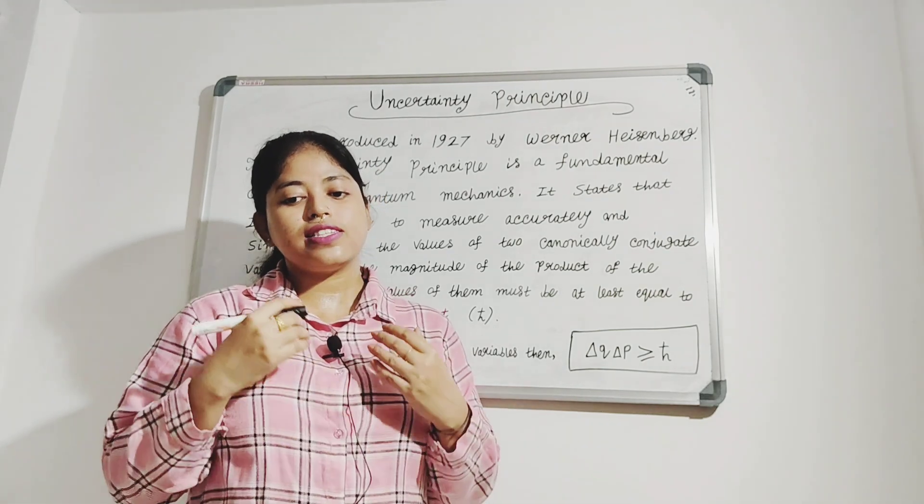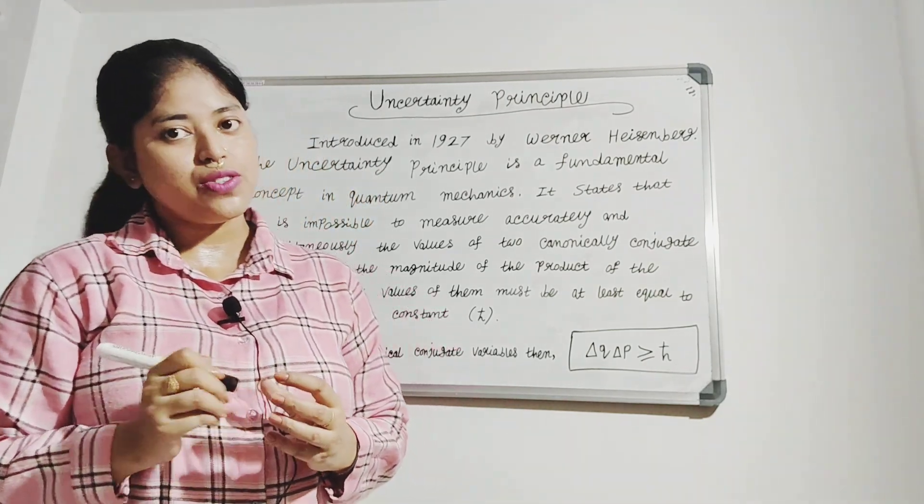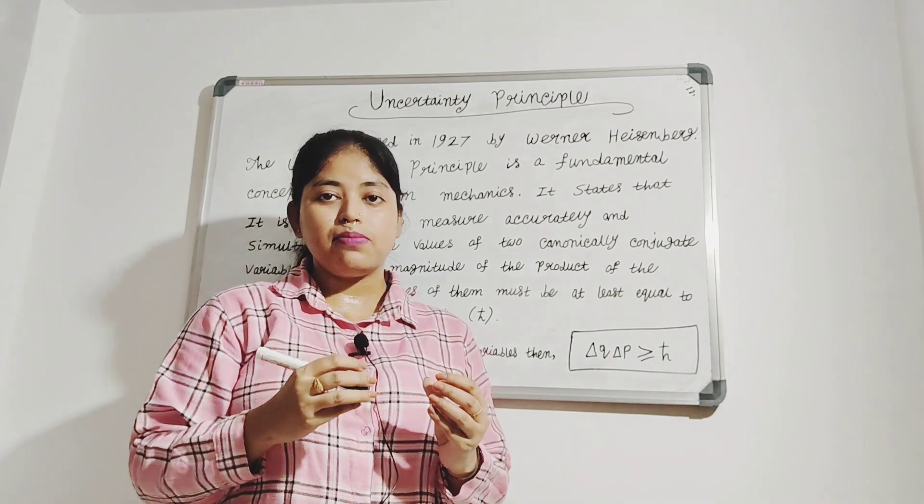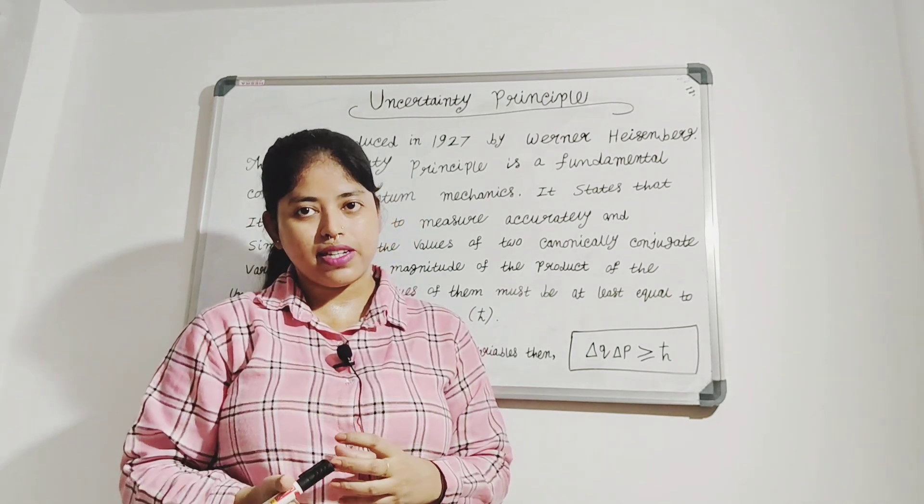That means there is a limit to the precision with which certain pairs of physical properties can be measured accurately and simultaneously.